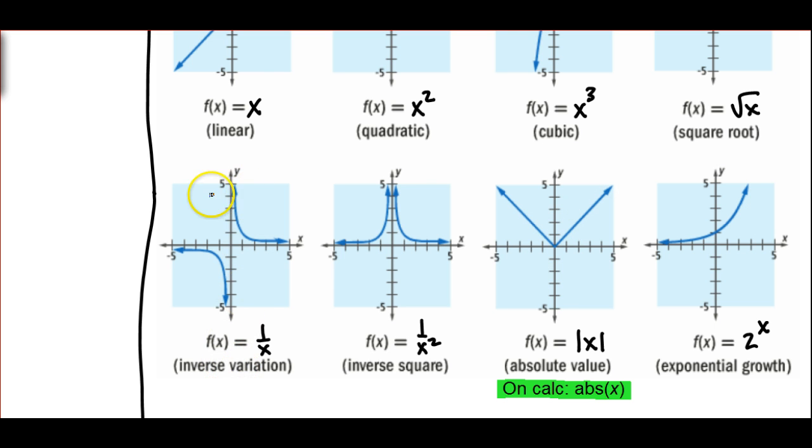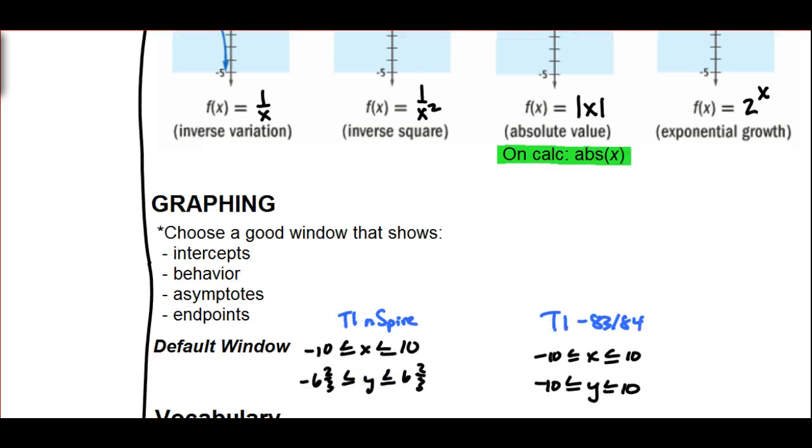If you choose a window for something like the hyperbola graph and you can only see the first branch in quadrant one and the other branch in quadrant three is missing, again, that would not be a good window. This graph of one over x should contain two branches, and your window should contain both. Again, if a graph has asymptotes, those should be easily visible in the window that you choose, as well as any endpoints that the graph may contain.